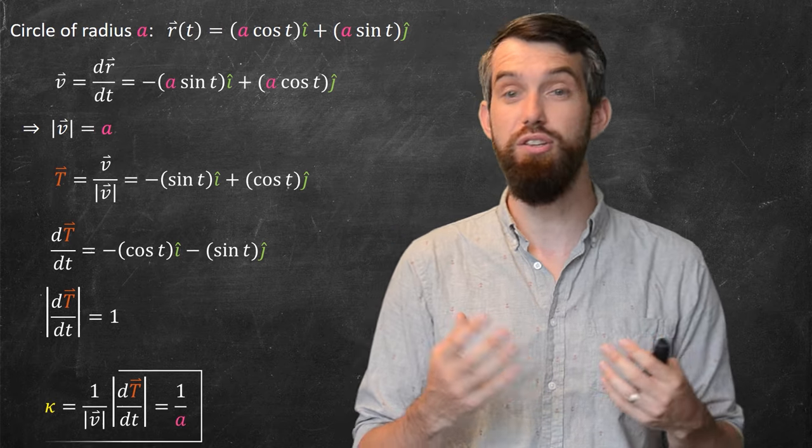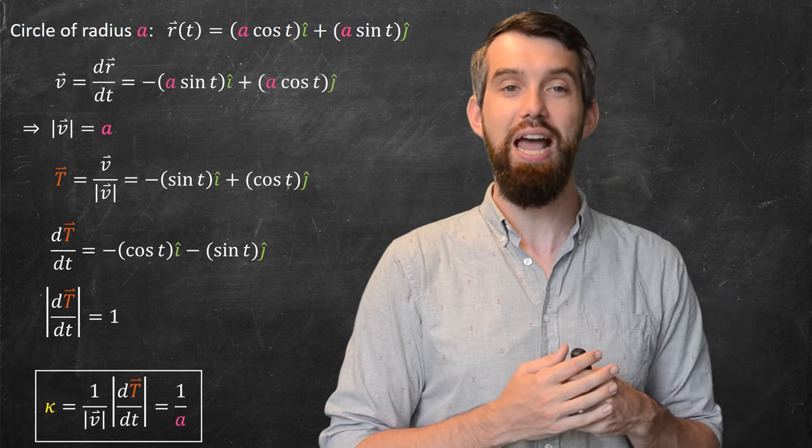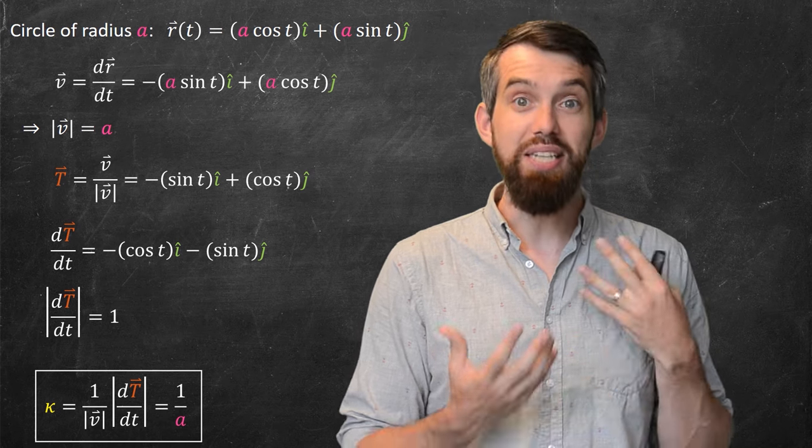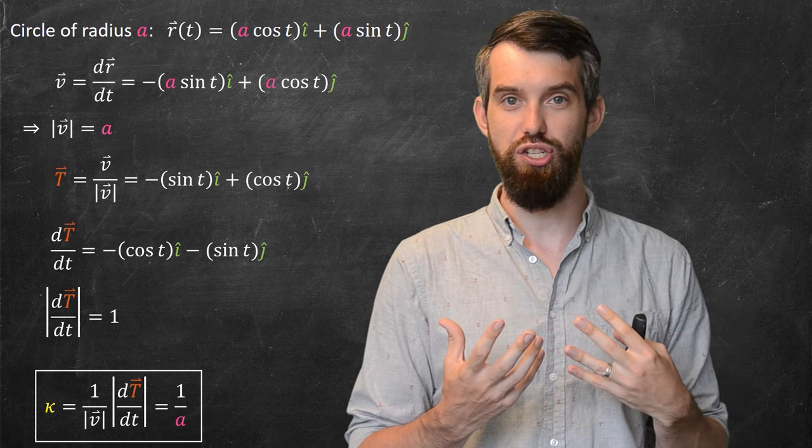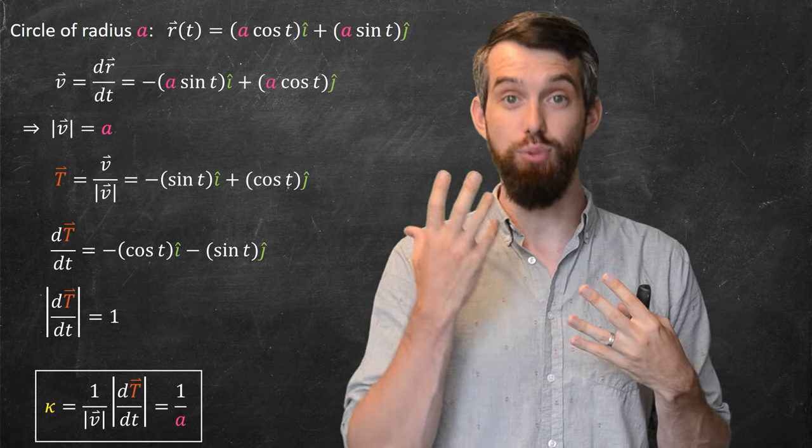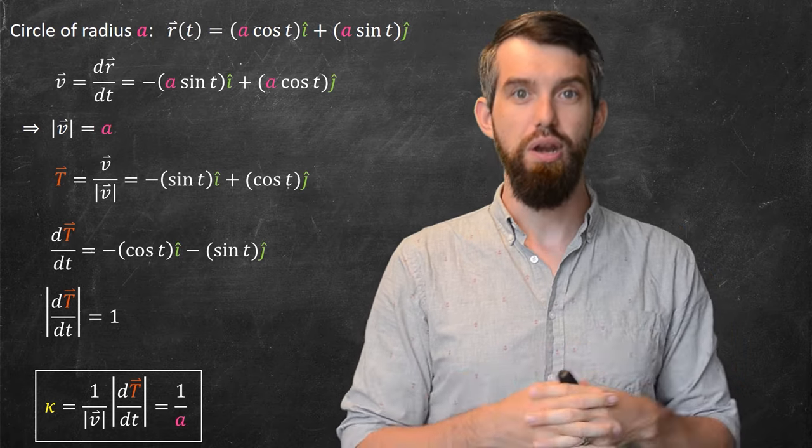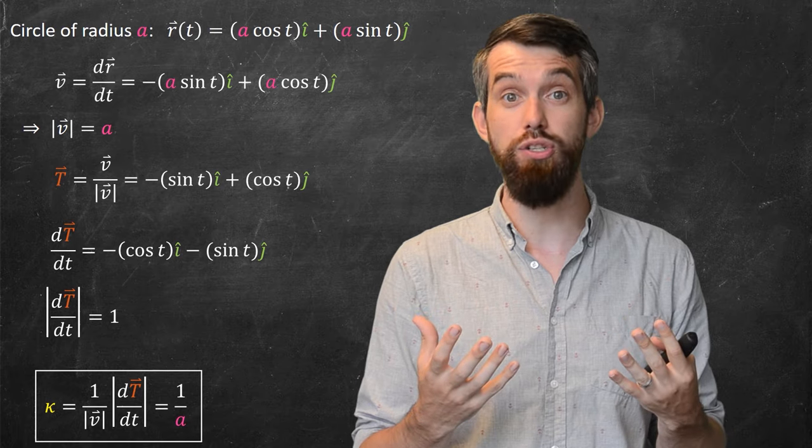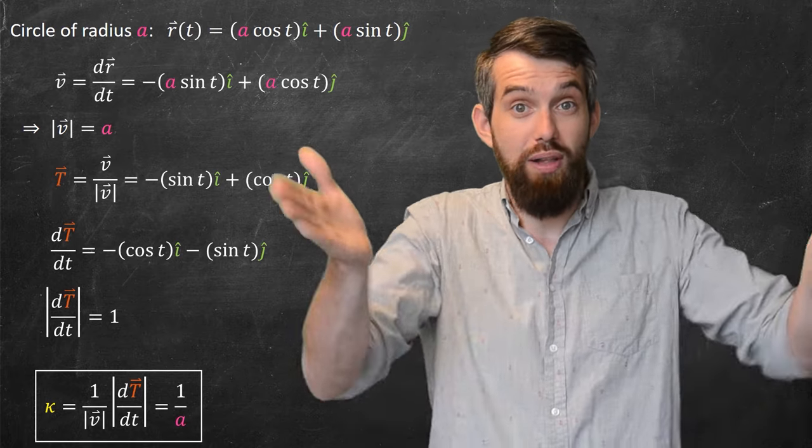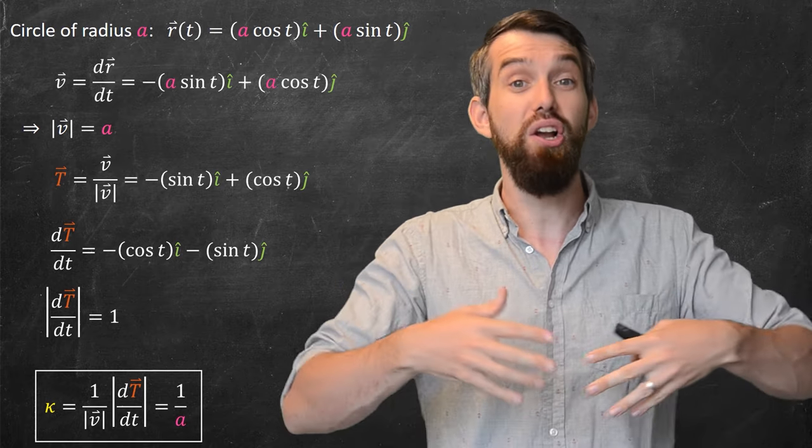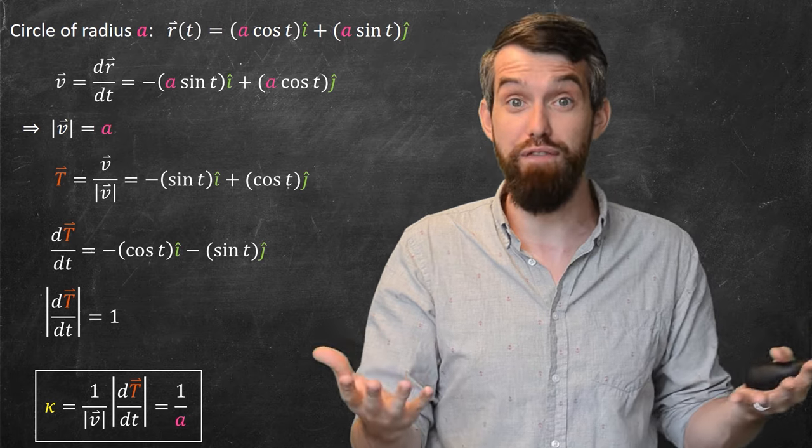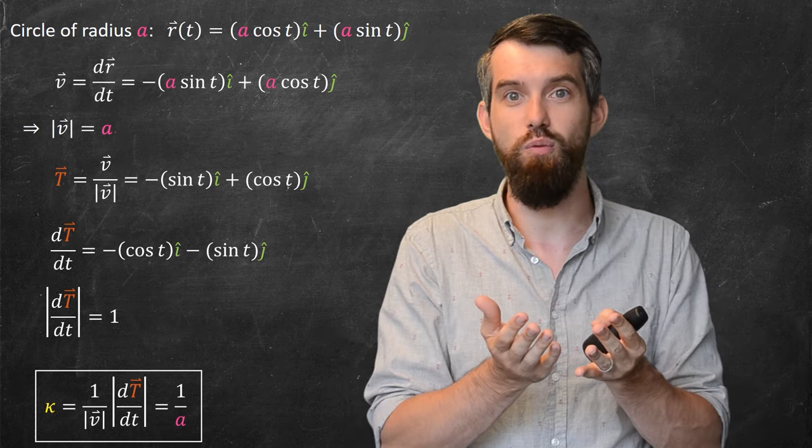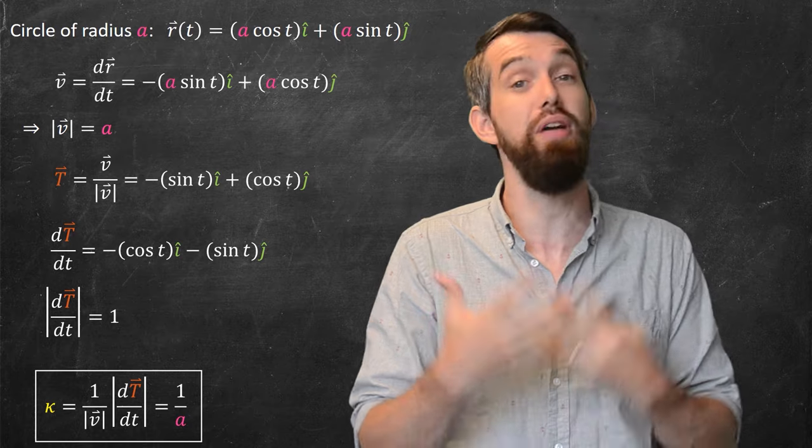I've computed what I need to, so I can just plug it into my formula, and I get that kappa, the curvature, which is 1 over the velocity times the length of dT/dt, this is just going to be 1 over a times 1, or 1 over a. Note, this matches my prediction. If you have a really big radius, if a is really large, then your curvature is quite small. It's a very flat curve, kind of like the curvature of the earth that looks pretty flat from our perspective on it. However, if you have a really small curve, then 1 over a is much larger, and you have a bigger curvature.